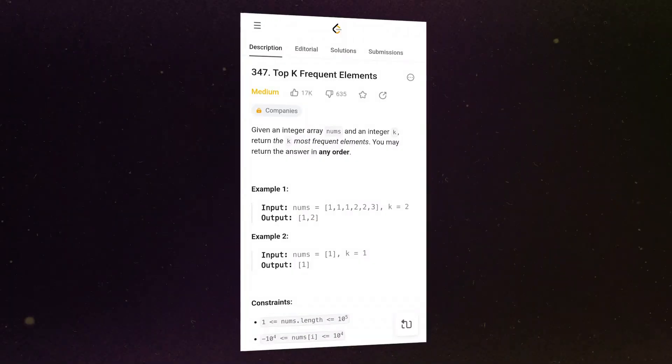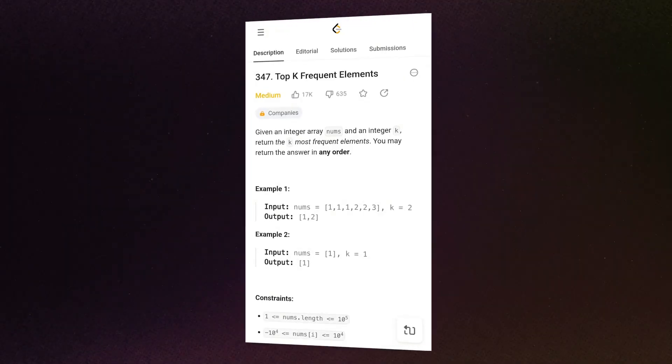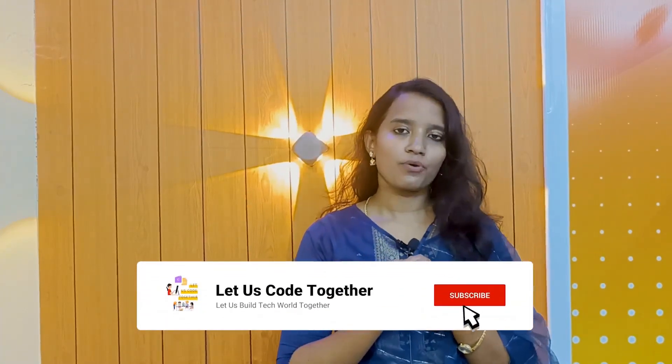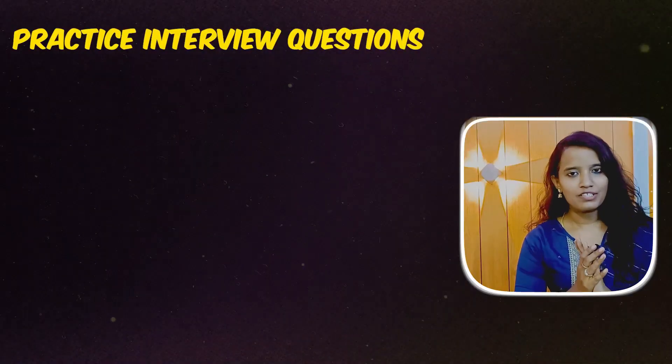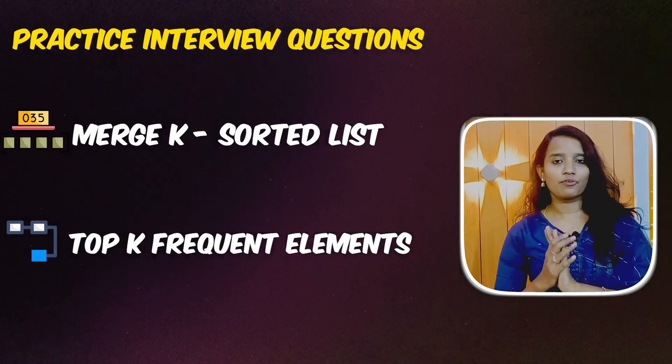Last but not least, Number 7: Heap. If a problem involves the lowest or top K elements, it likely belongs to the heap category. For example, to find the maximum K elements, use a min heap of size K. Add elements to the min heap, and when it exceeds size K, remove the minimum. This ensures your heap always holds the top maximum elements. Practice questions: merge K sorted lists, top K frequent elements.